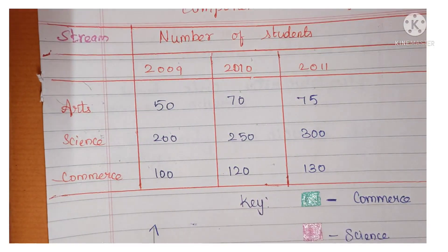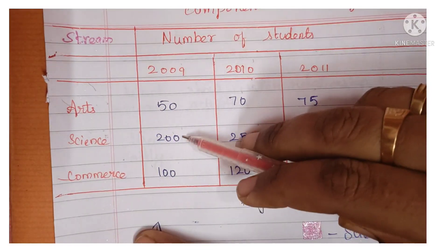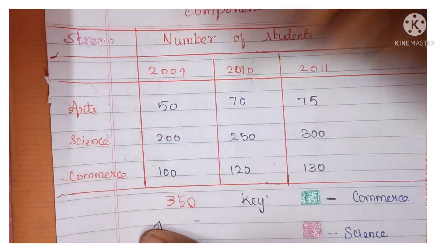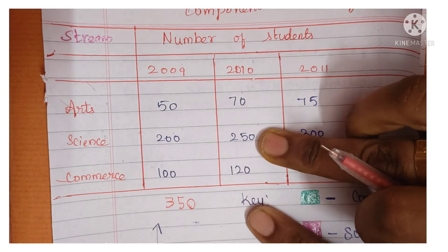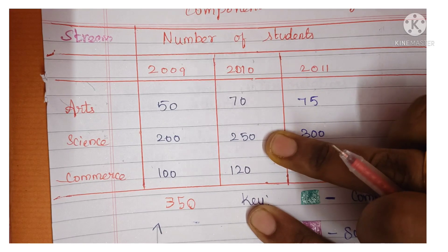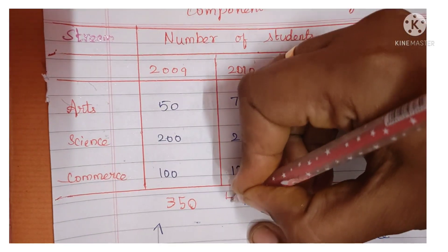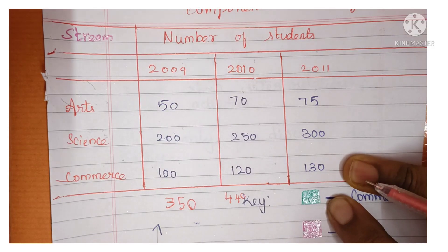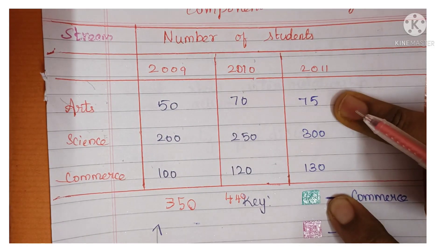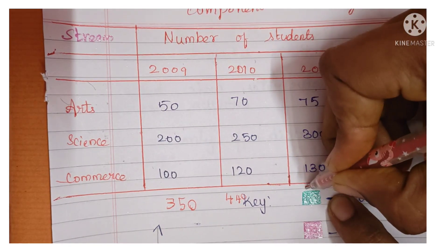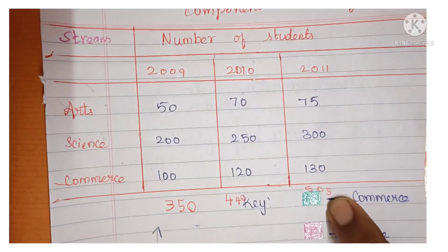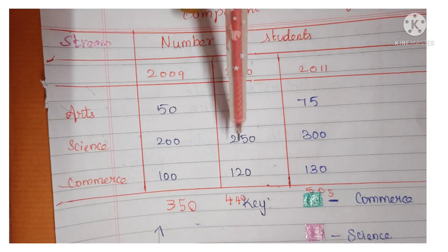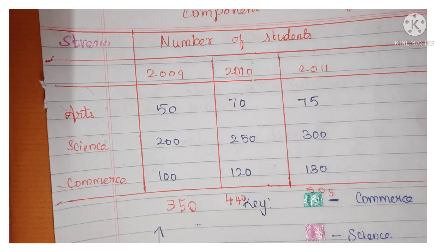Now add everything. In 2009: 50 plus 200 plus 100 equals 350 total. In 2010: 70 plus 250 plus 120 equals 440 total. In 2011: 75 plus 300 plus 130 equals 505 total. In the key, I have given arts as green color, science as pink color, and commerce as blue color — though you can use any color or design you prefer.